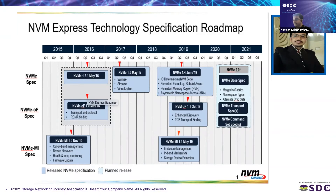The NVMe 2.0 specification is divided into eight different specifications including the base spec, a command specification covering the NVMe command set, ZNS command set, and KV command set, and a transport specification covering PCIe, RDMA, and TCP transport specifications. The management interface specification is kept separate. The restructured 2.0 specifications enable faster, simpler development of NVMe technology, supporting seamless deployment of flash-based solutions in many emerging market segments.